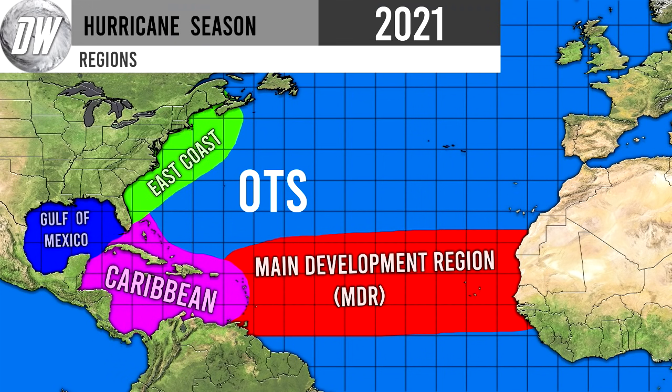I've been doing this for every single hurricane season update video — here are our hurricane season regions, basically the major regions you'd see me mention. First, OTS stands for out to sea, so that would be any region basically out to sea. We have our main development region, the MDR for short. We have our Caribbean, the Gulf of Mexico, and the east coast — those three should be quite obvious.